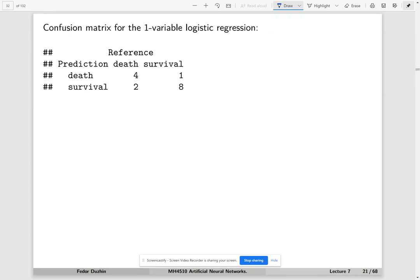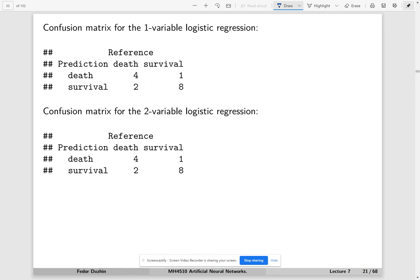Okay, well, this is confusion matrix for the one variable logistic regression. So there are three observations misclassified. So for the two variable logistic regression, even though the loss is smaller, still two observations are misclassified,